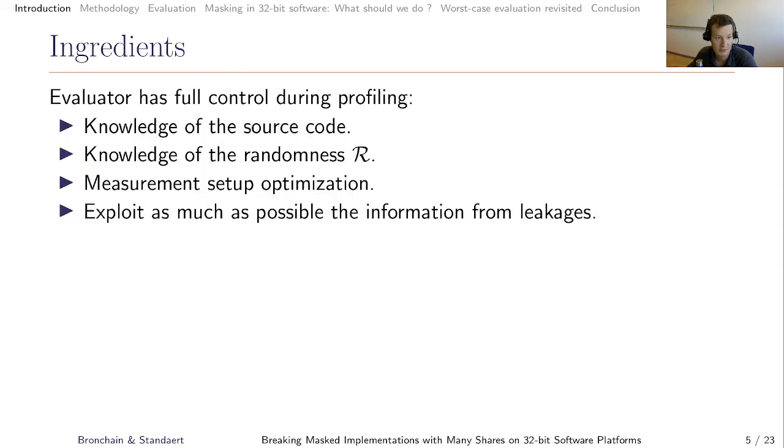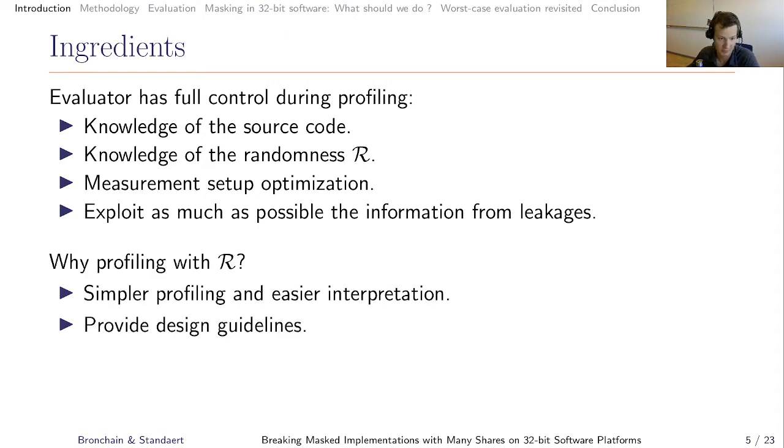The goal of this paper is to propose worst-case attacks or worst-case evaluation, and the goal of that is to anticipate future improvement of state-of-the-art. How do we do that? What are the ingredients? Basically, we give full knowledge to the evaluator during profiling. During profiling, the evaluator has access to the source code, to the randomness that is used for masking. What are the shares? What are the inputs? What is the plaintext? What is the key? He also has the opportunity to have a measurement setup that is as clean as possible. And he has to have an efficient technique to exploit all information within the leakage. Why do we need randomness during profiling? Basically, it allows to simplify the profiling stage and allows also to give a good interpretation of the attack results. And it also enables to give clear guidelines to the evaluator.